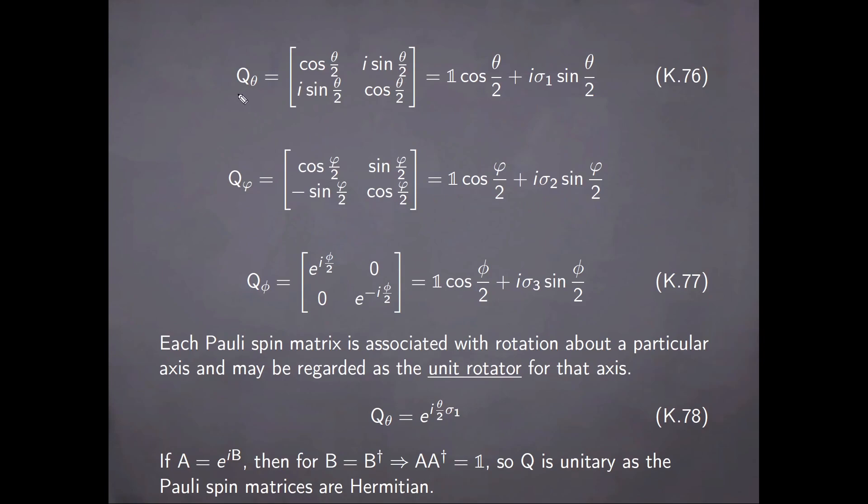If we were to write the quaternion vector corresponding to rotations about the x, y, and z-axis through the angles theta, phi, and psi, then their expressions are those given here, and you can see right away that they can be expanded in this form. So each Pauli spin matrix is associated with rotation about a particular axis and may be regarded as the unit rotator for that axis. Also, symbolically, we can write, for instance, the matrix Q theta as the exponential of sigma 1 having the argument here.